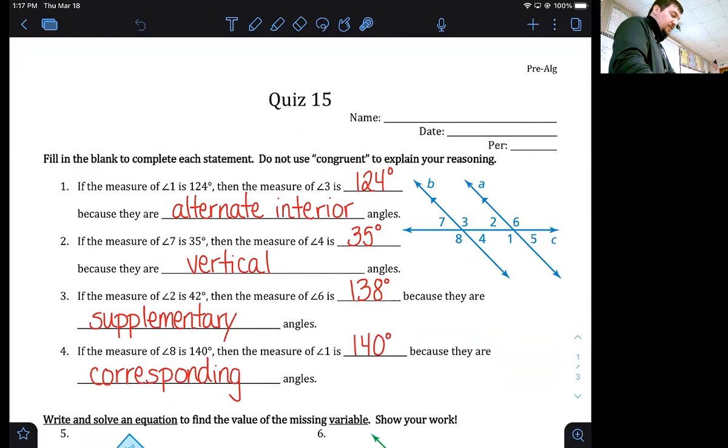So 180 minus 42 is 138 degrees, so they're supplementary. And number four, if the measure of angle eight, this obtuse angle, is 140 degrees, what's the measure of angle one? Well, angle eight is the bottom left angle and angle one is also the bottom left angle. They're the same angle on just on different lines, so they correspond to each other.